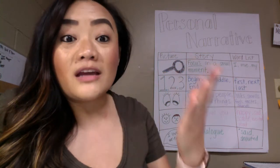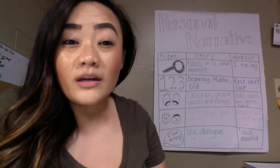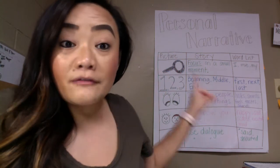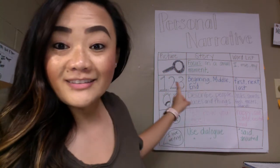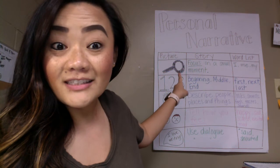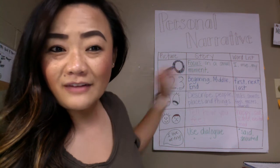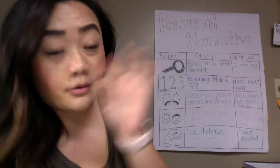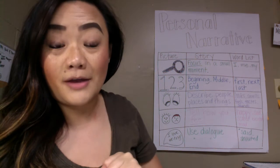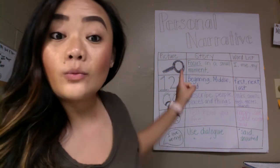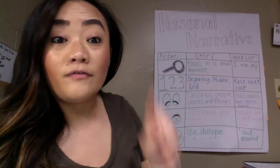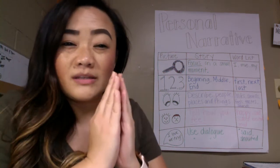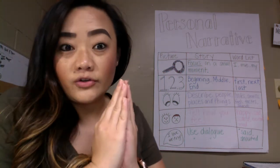When you think about everything that you did, we're going to pick one small thing to write about. The first picture up here is the magnifying glass. The magnifying glass is something we use when we want to see something really close, or see all the details on something. So, like with a magnifying glass, you're going to focus on one small moment — you're going to pick something small in your story.